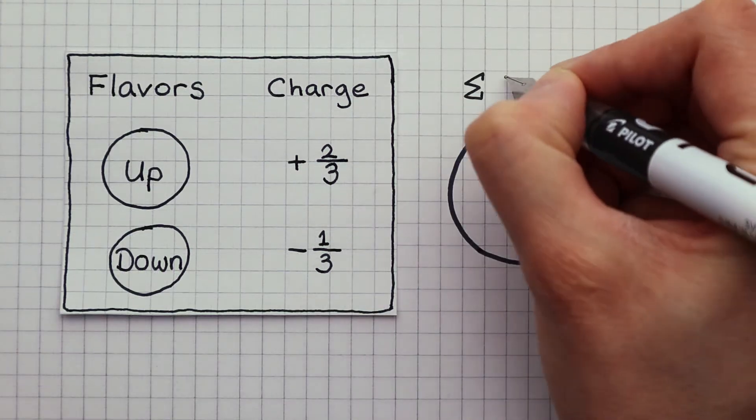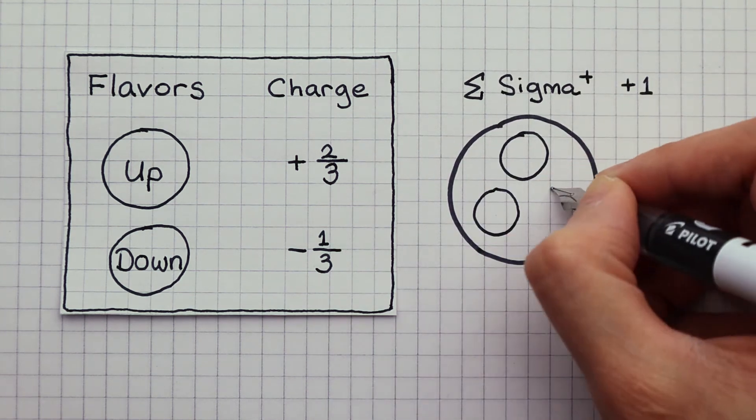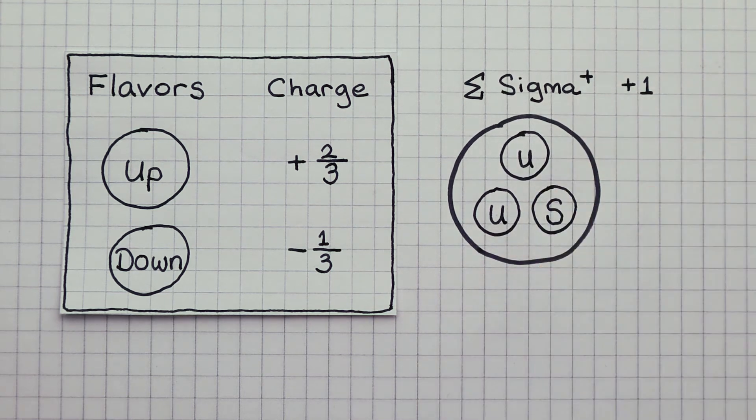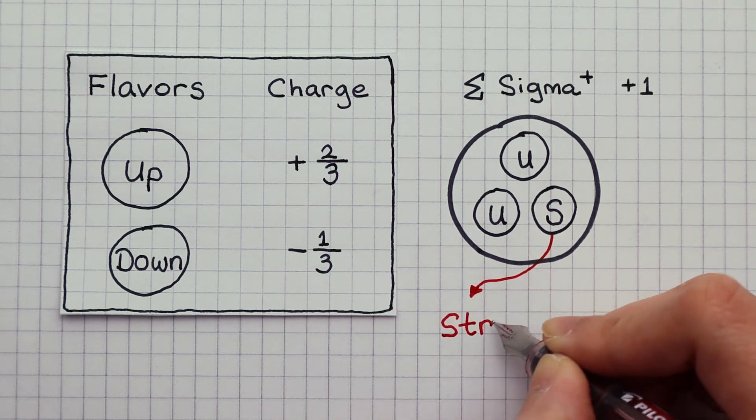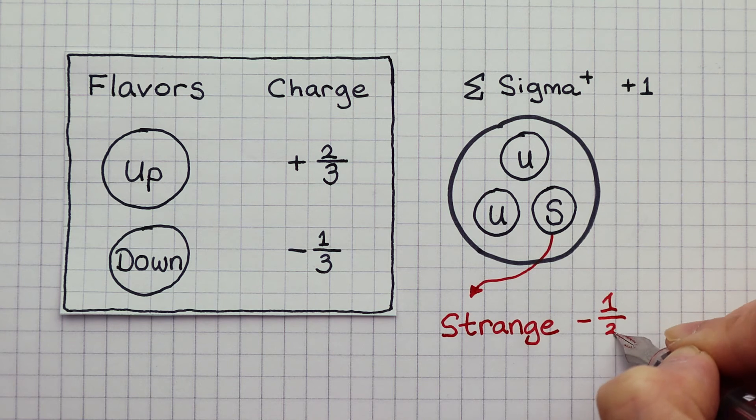Just like a proton, the sigma particle is a baryon with a charge of plus one. But its quark composition is this. Here I am introducing a new quark called the strange quark. The strange quark also has a charge of minus a third, just like a down quark.